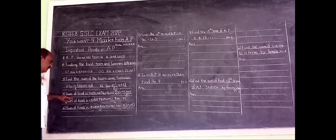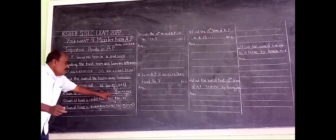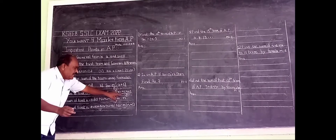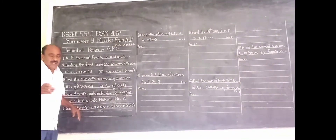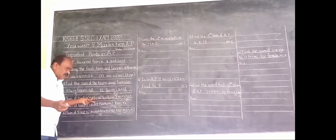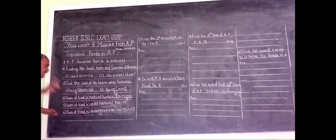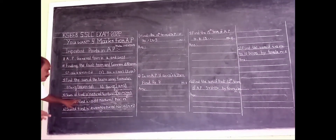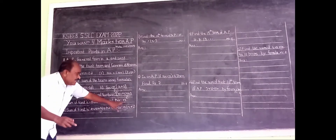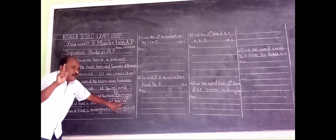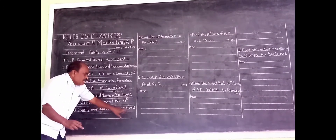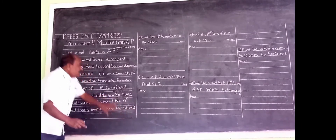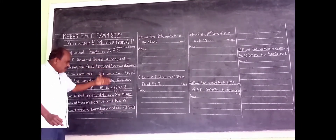I wrote the sum of the first N natural numbers. From 1 to N, summation of N equals N into (N plus 1) divided by 2. Using this formula, they may find the sum of natural numbers, or sum of even numbers, or sum of odd numbers. They may give one or two marks from this. Also, sum of the first N odd natural numbers equals N squared — this is a 1-mark question in multiple choice. Second, sum of the first N even natural numbers equals N into (N plus 1).